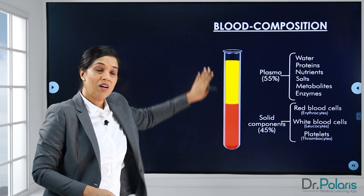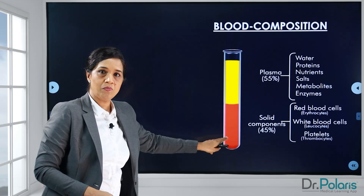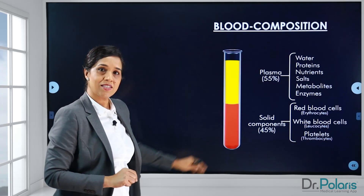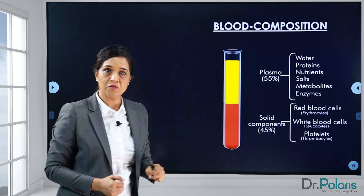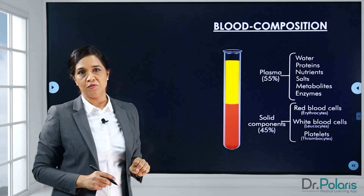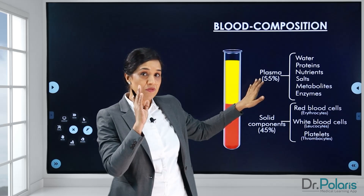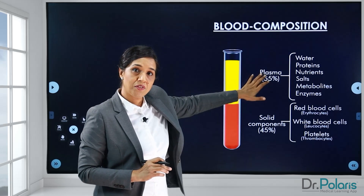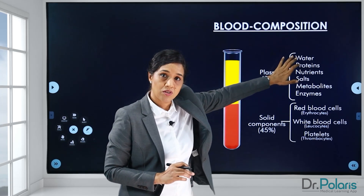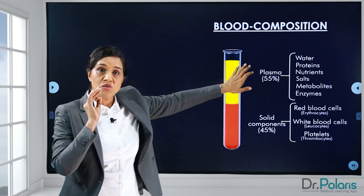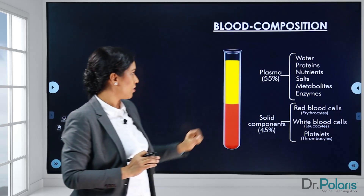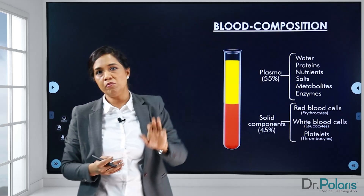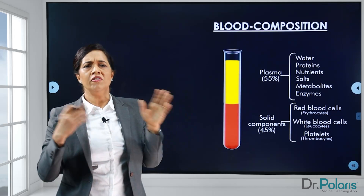Looking at a slide here — this is a test tube where you have blood with anticoagulant. You have the plasma component of the blood and then the solid component. The plasma component makes up 55 percent and the solid component makes up 45 percent. Looking at the 55 percent plasma component, you have water — which is a major component — 92 percent of the plasma is made up of water. Then you have the proteins: albumins, globulins, fibrinogen, prothrombin, and a few more proteins.